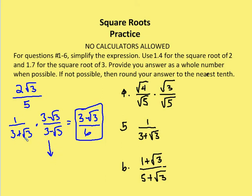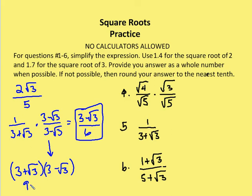Let me verify that (3 plus root 3)(3 minus root 3) equals 6. Using FOIL: first gives 9; outside gives negative 3 root 3; inside gives plus 3 root 3; last gives minus root 3 squared, which is minus 3. The middle terms reduce to 0, and 9 minus 3 equals 6. There you go.